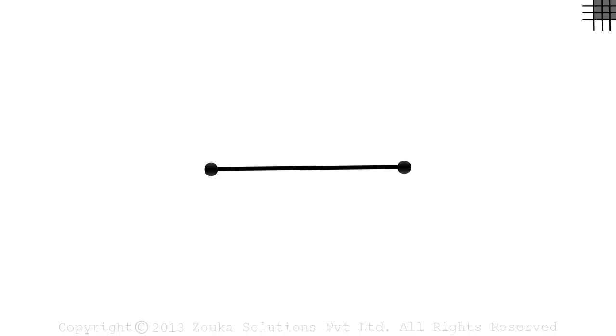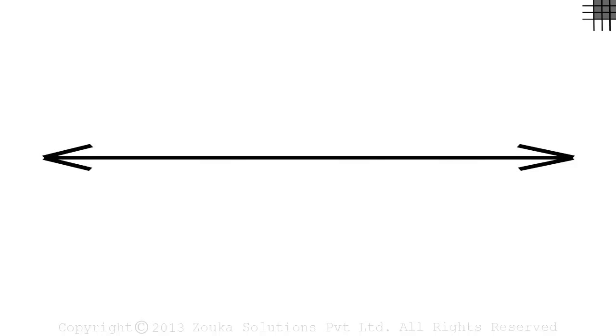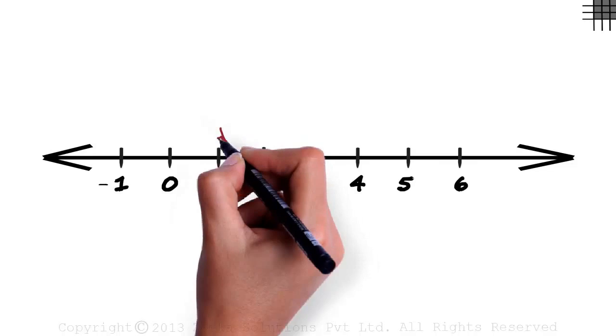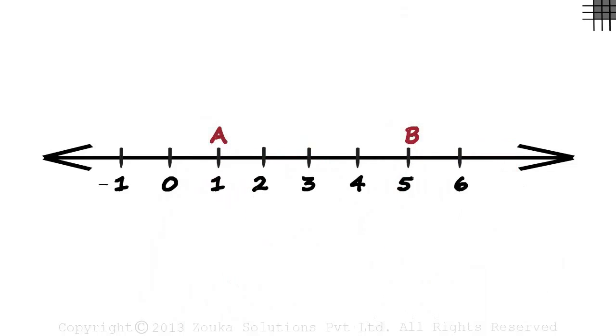Let's see how we can find the distance between two points. Let this be our number line, where we have numbers from minus 1 to 6. And these are two points on the number line.